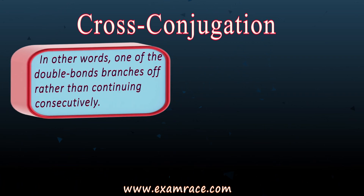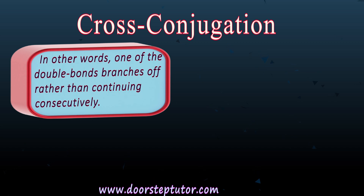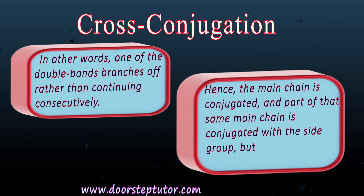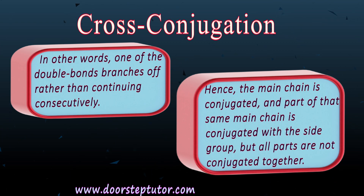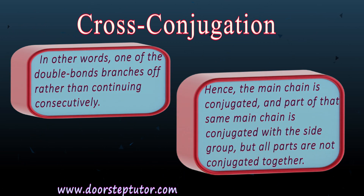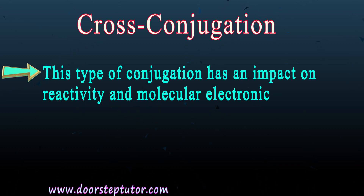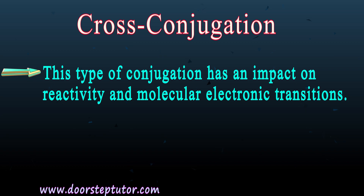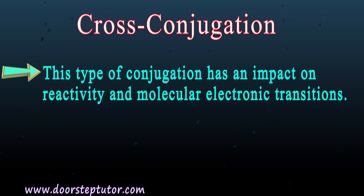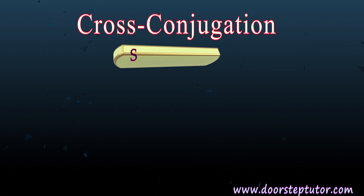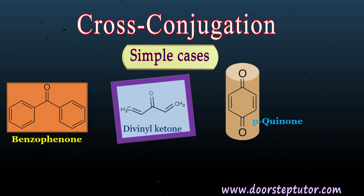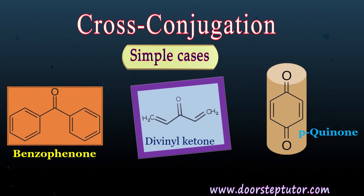In cross conjugation, one of the double bonds branches off rather than continuing consecutively — one branch is cut off from the conjugation system. The main chain is conjugated, and part of the main chain is conjugated with the side group, but all parts are not conjugated together. This type of conjugation has an important impact on reactivity and molecular electronic transitions. A simple example is benzophenone.